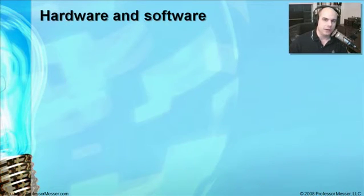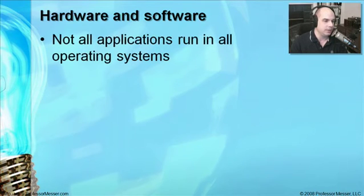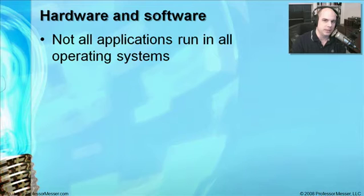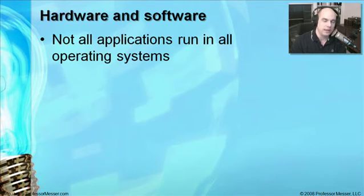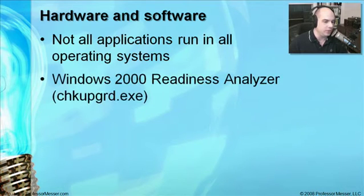Before considering whether to upgrade your operating system, keep in mind that the hardware and software you're using may or may not work in the upgraded operating system. Everything has to work together. You may have purchased or downloaded applications you're using in Windows NT and when you move to Windows 2000, those applications may not work anymore. Printers may stop working. Video cards and all other hardware are operating system specific, so there's work to do beforehand to make sure everything will work properly in the new operating system.